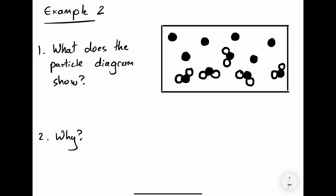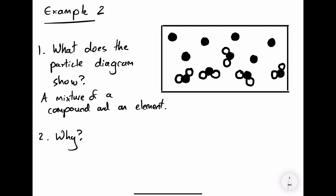Here's example two. What does the particle diagram show? The particle diagram shows a mixture of a compound and an element. How do we know from the particle diagram that it's a mixture? Because the compound and the element are not chemically joined together.